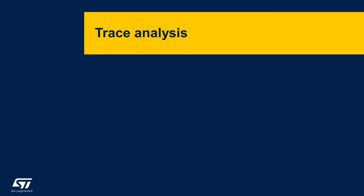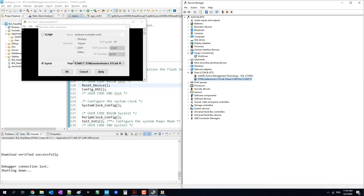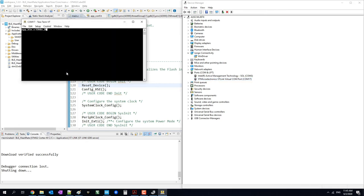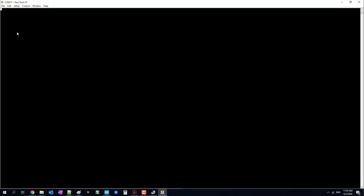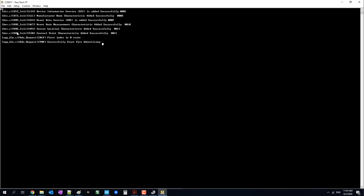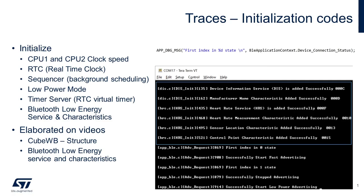Let's take a look at what TeraTerm is showing. Check the COM port and the settings from TeraTerm. Press the reset button and you'll see the traces. The app debug message, which is similar to the printf function, prints the messages depending on the preprocessor setting. When working with ST's BLE examples, the code will initialize various things such as clock speeds, the RTC, sequencer, low power mode, timer server, and BLE services and characteristics.